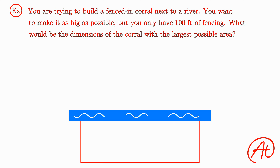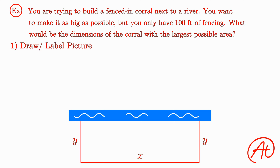In order to solve any optimization problem, follow this process. First, we should always draw and label a picture of the scenario to help us visualize it. So here's our nice little river and our three sides we need to fence in. Let's label the one side parallel to the river some unknown x, and since it is a rectangle, let's label both sides perpendicular to the river y, since we know they will be the same.